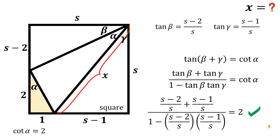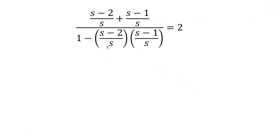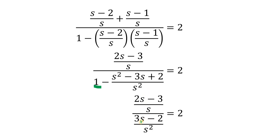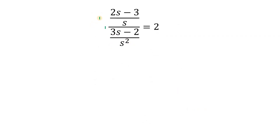Using this equation, we can now solve for s. Let's apply the tangent addition identity: tangent of beta plus gamma equals tangent of beta plus tangent of gamma, all over 1 minus tangent of beta times tangent of gamma. Substituting the known values, the numerator simplifies to 2s minus 3 over s, and the denominator product is s squared minus 3s plus 2 over s squared, giving us s squared minus 3s plus 2 over s squared in the denominator.